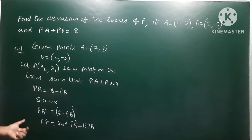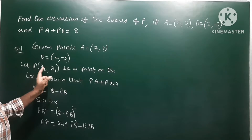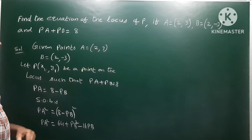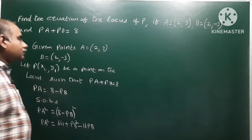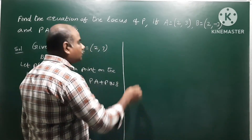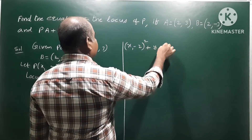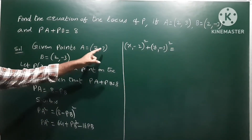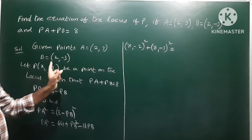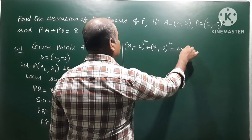Now substitute the values. PA is the distance between P and A. Using the distance formula and squaring: PA² equals (x1 minus x2)² plus (y1 minus y2)², so PA² equals (x1 minus 2)² plus (y1 minus 3)².